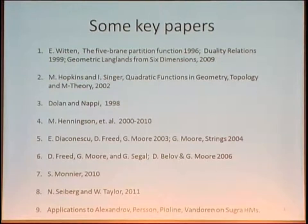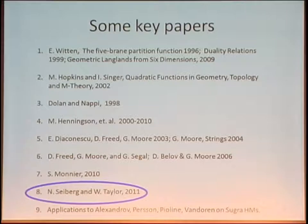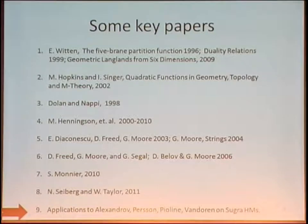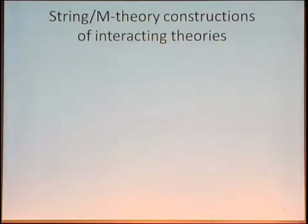Here are some key papers on the subject, going back to Witten's foundational paper on the five-brane partition function. In the past year, Sam Monnier wrote a nice paper on the metric dependence of that partition function. Zeiberg and Taylor discussed the Dirac quantization for these generalized abelian theories. These gentlemen are also thinking about the partition function because it's important to their program of understanding quantum corrections to the hypermultiplet moduli spaces of type II compactifications on Calabi-Yau.